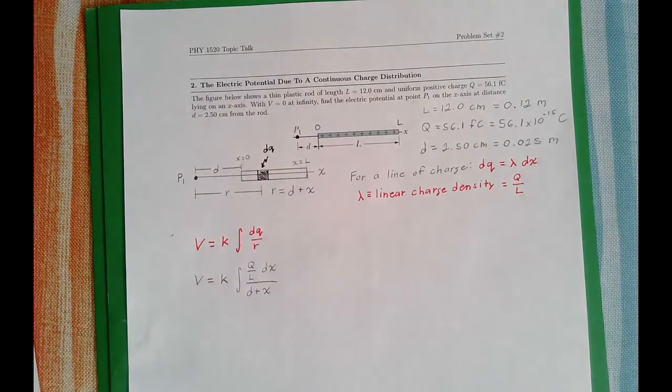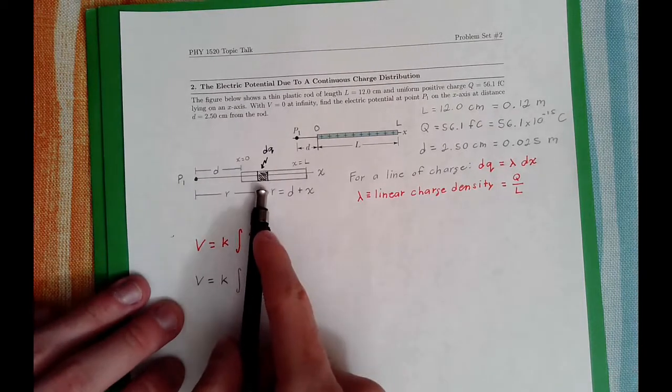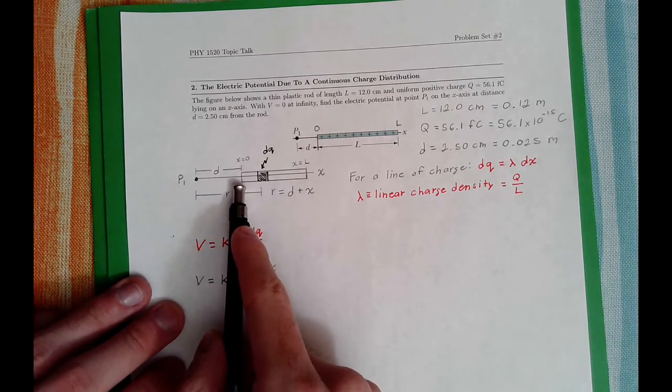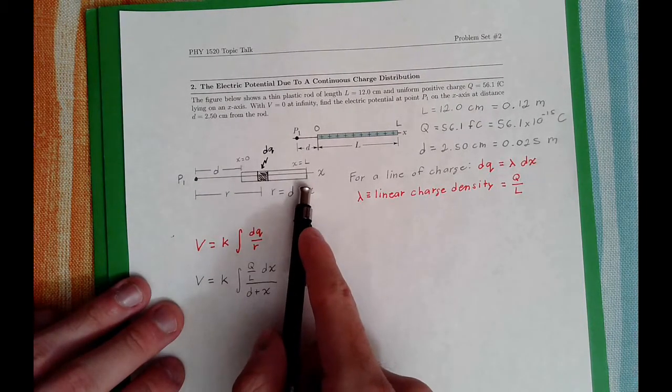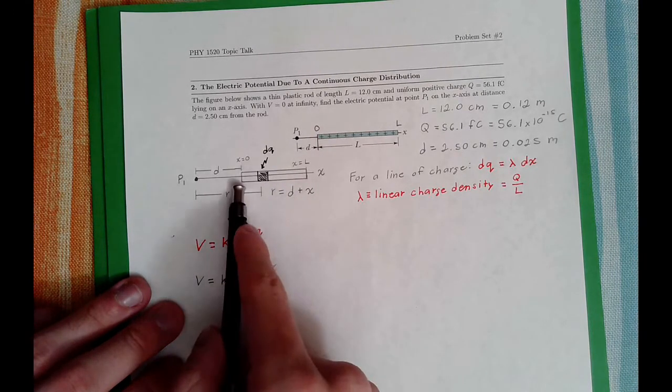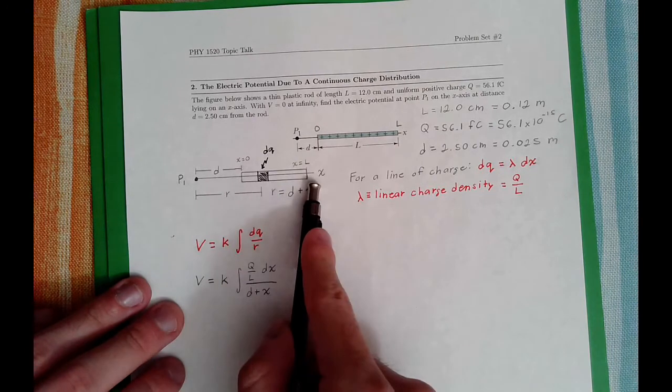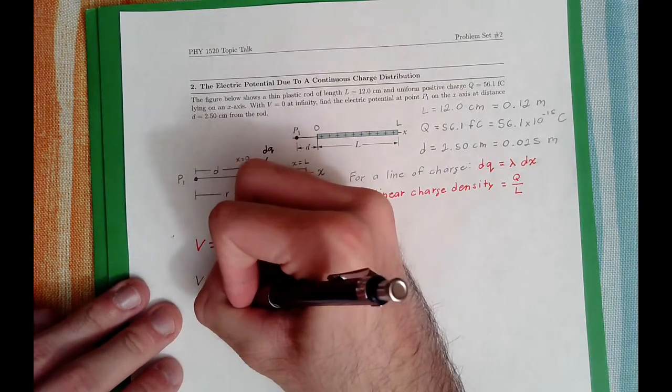We have to add this distance D plus whatever value of X that DQ happens to be. So the integration so far is Q over L, DX, all divided by D plus X. Now, what are the bounds? The integration needs a bound. Well, what values does DQ range from? DQ goes from X equals 0 to X equals L. And we are integrating with respect to X. So the left bound is 0, the right bound is L.